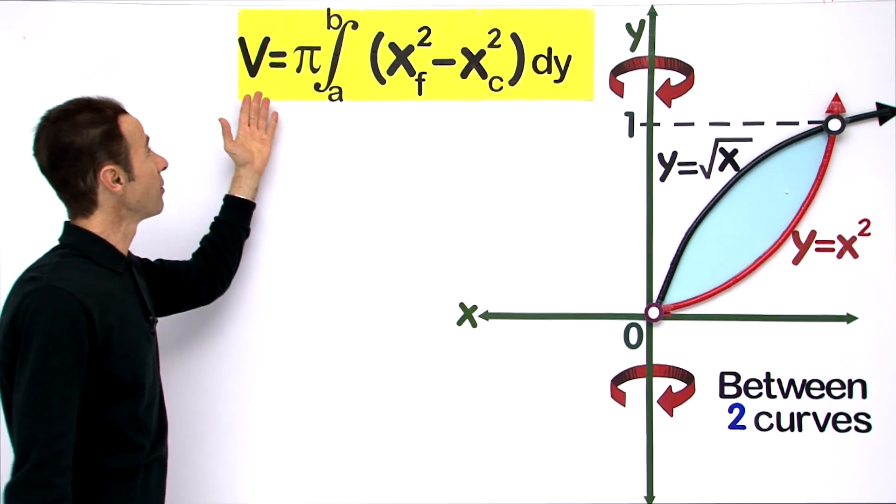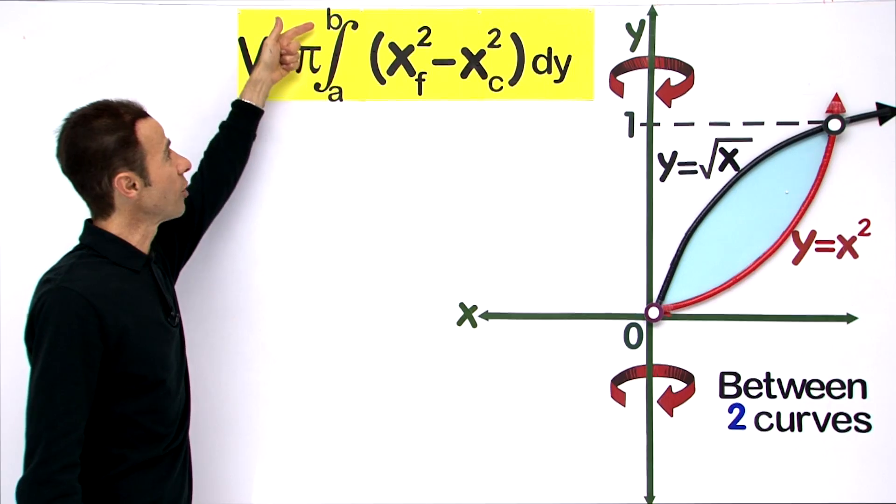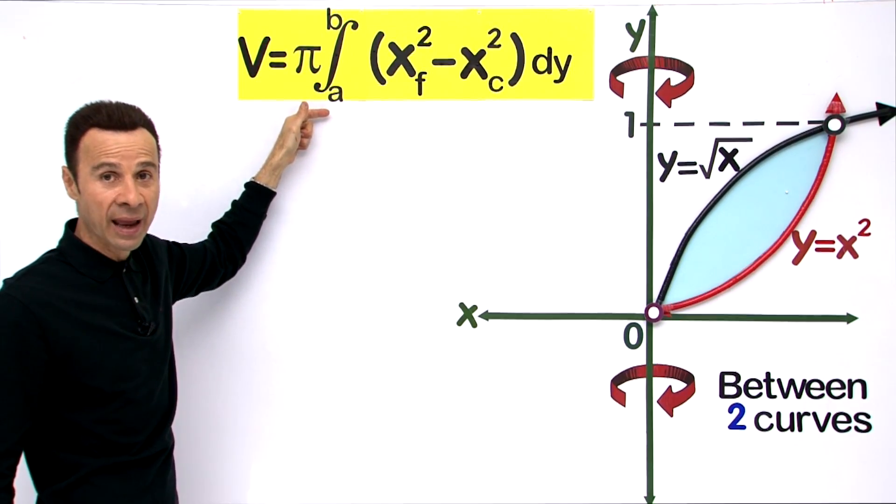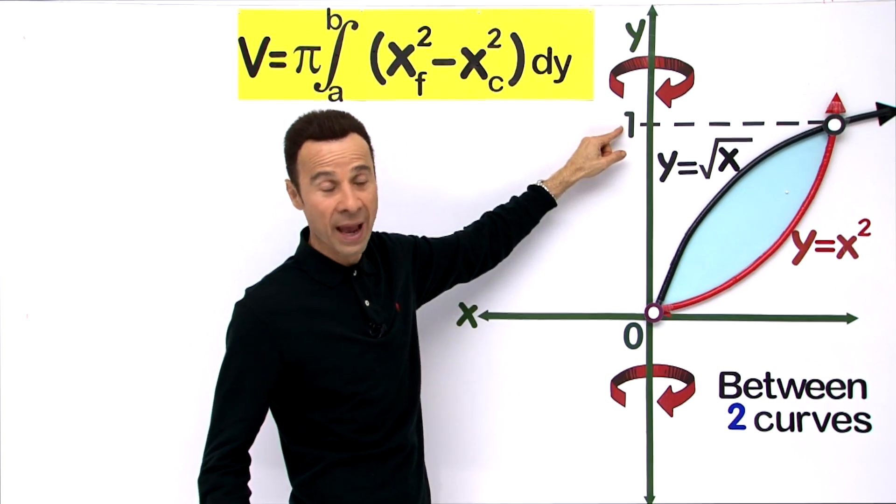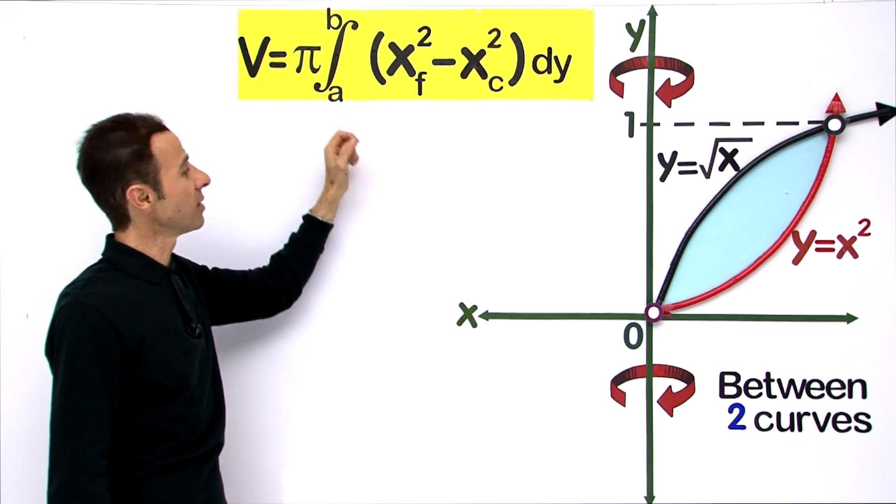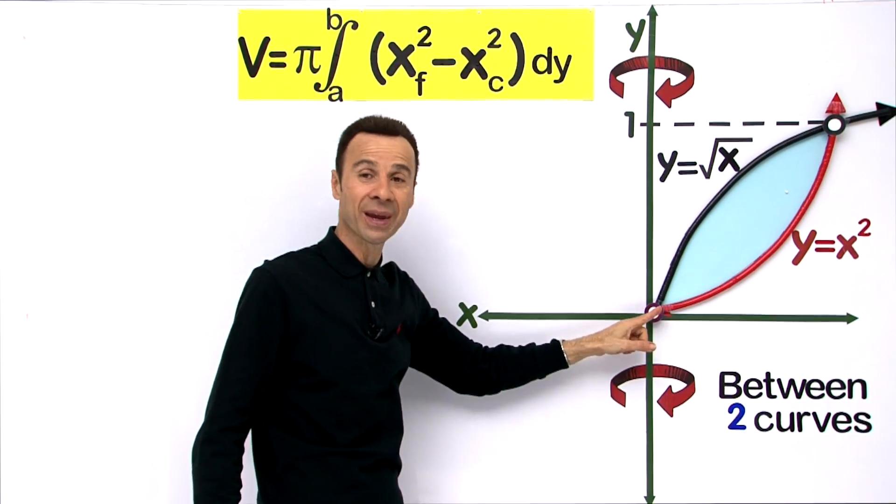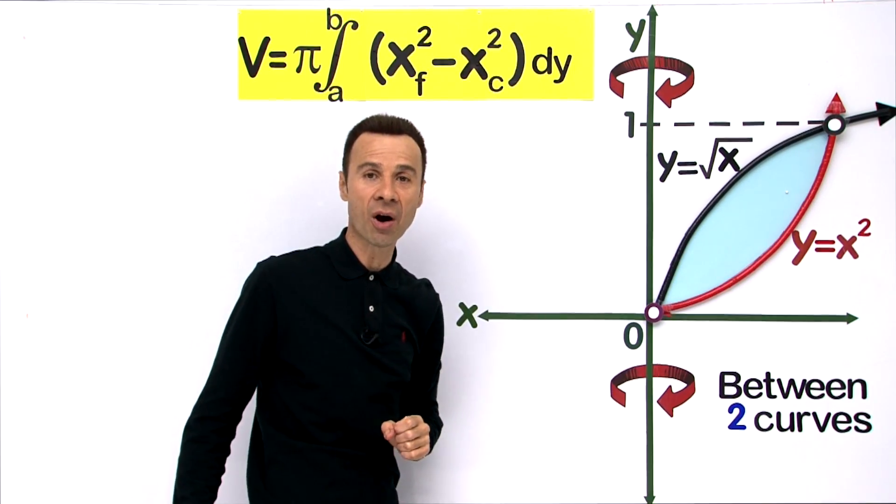Let us look at this formula: v equals pi times the integral with upper and lower limits. The upper limit will be y equals 1 because it is on the y-axis, and the lower limit is 0 because they both intersect at the origin.